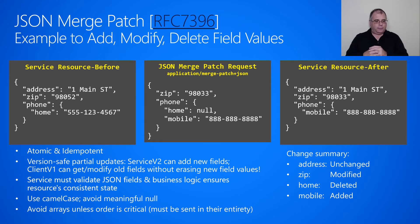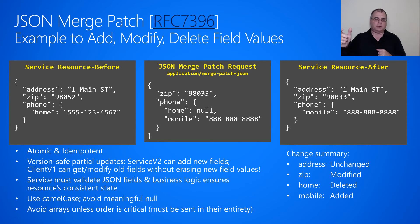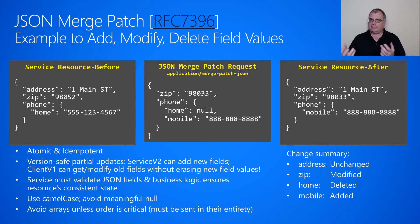The service must validate all the JSON fields — this is always true — and the business logic ensures that the resource is always in a consistent state. It's recommended for JSON payloads that you use camel casing, and you have to avoid meaningful nulls. That is, you shouldn't have a property whose value is null, because with JSON Merge Patch, sending something as null means to delete it. Having the property absent or present with a null is logically the same thing.